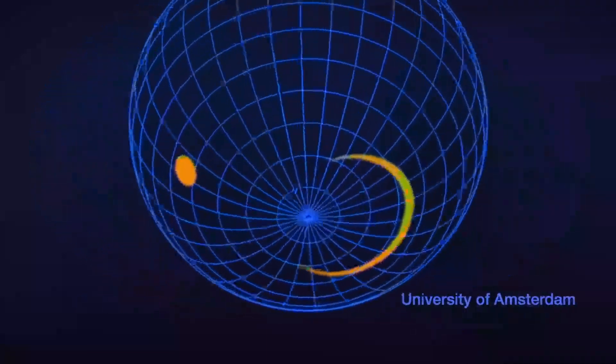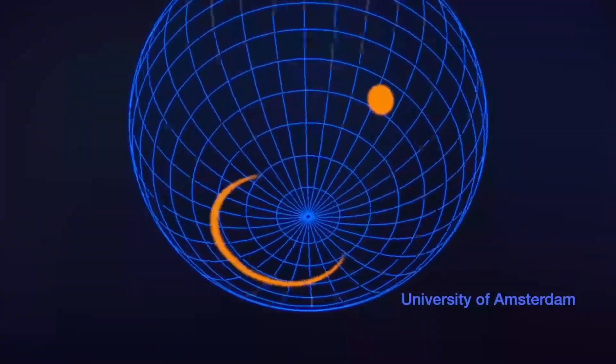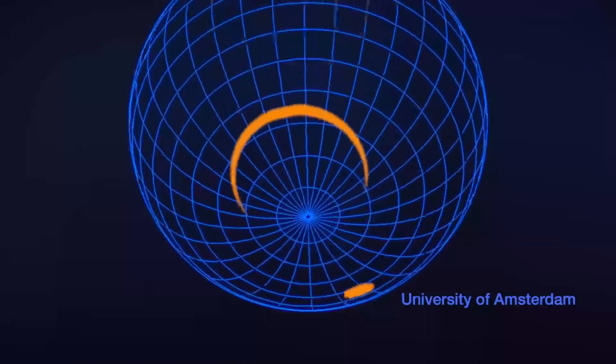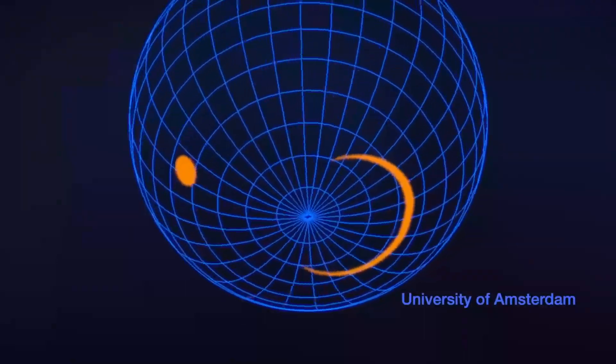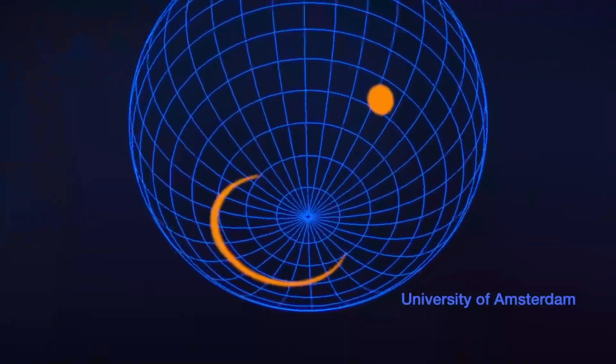One team, led by researchers at the University of Amsterdam, suggests J0030 has one small circular spot and another long crescent-shaped one.